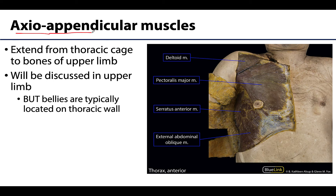We will talk about axial-appendicular muscles that extend from the thoracic cage, like pectoralis major shown here, or from this portion of the axial skeleton to bones of the upper limb or the appendicular skeleton. Pec major, pec minor (which is deep), and serratus anterior are going to have their proximal attachments associated with the thoracic cage, then attaching to the scapula or the humerus — so really more involved with moving those regions.